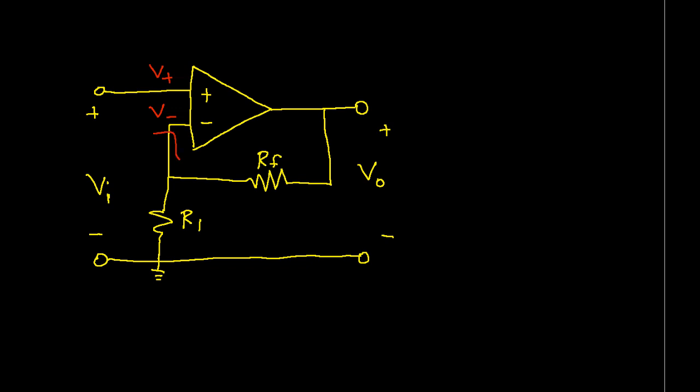We will do a KCL, Kirchhoff's current law, analysis at the non-inverting input of the op-amp. You'll notice that the voltage of the non-inverting input with respect to ground, that is V-plus, is equal to Vi, the input voltage of our amplifier. We also know that V-minus is the same as V-plus from our ideal op-amp model. So V-minus is the same as Vi. From this node to ground, there is a voltage of Vi.